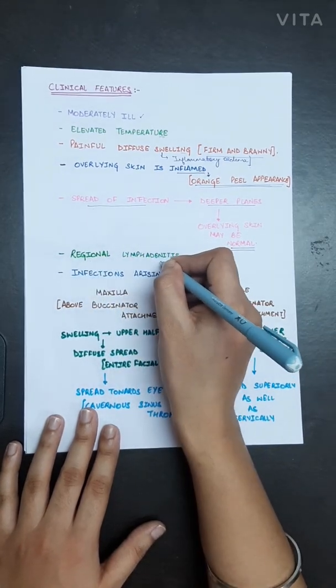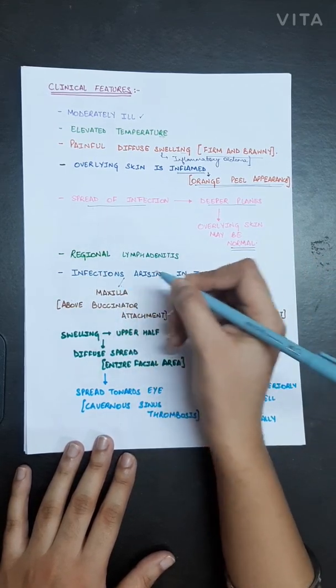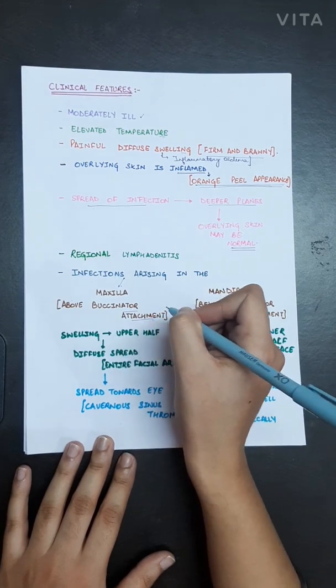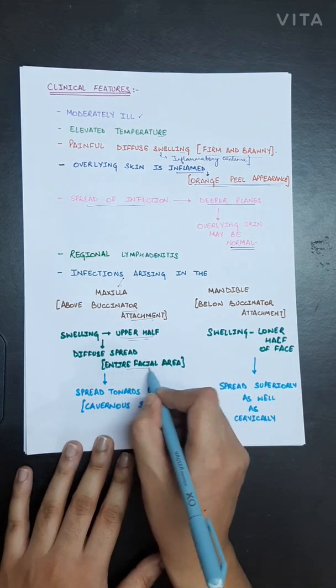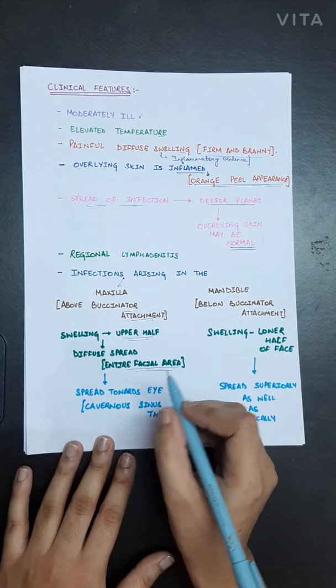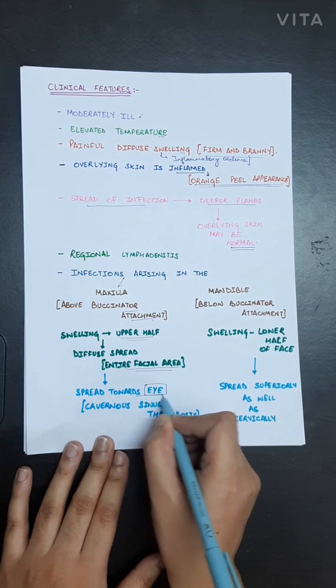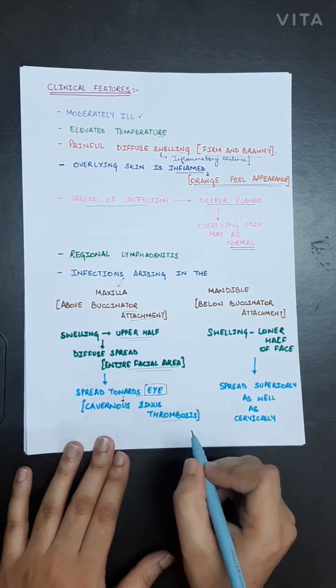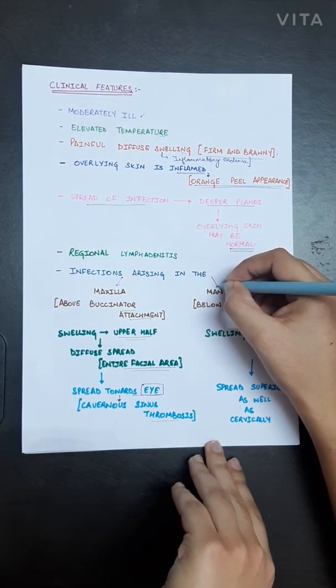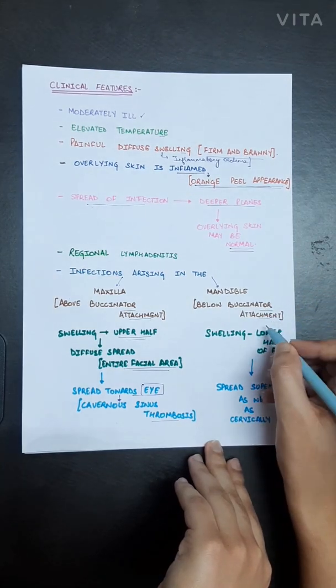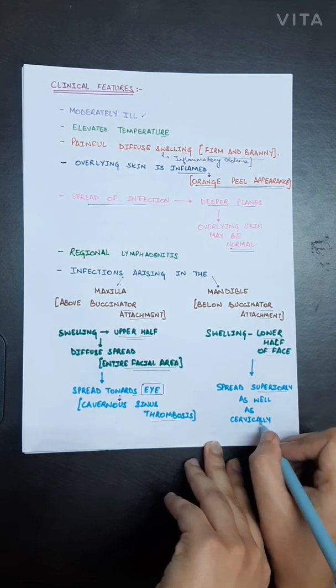Regional lymphadenitis may also take place. If the infection involves the maxilla, that is above the buccinator attachment, the swelling will appear on the upper half of the face and may spread towards the eye, which is very dangerous because it may involve cavernous sinus thrombosis. If the infection involves the mandible, that is below the buccinator attachment, the swelling will appear on the lower half of the face and spread superiorly as well as inferiorly.